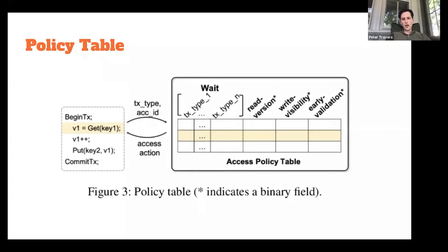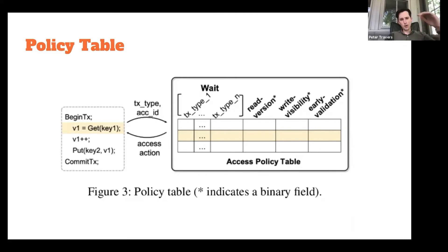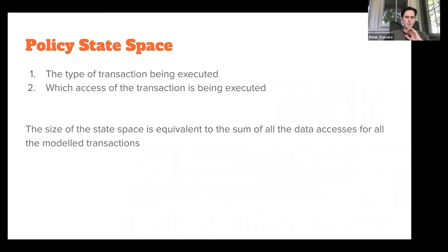The policy table is where the magic happens. For each column we have a possible action, and the row space is the possible set of states the system can be in. You look up for a transaction type and the current state of the system a set of actions to perform. The policy state space consists of: the type of transaction being executed, and which access of the transaction is being executed — either a read or write. The size of the state space is equivalent to the sum of all data accesses for all modeled transactions.